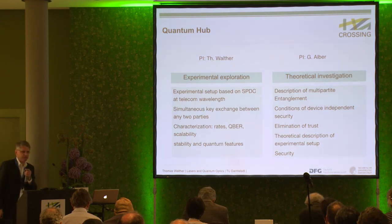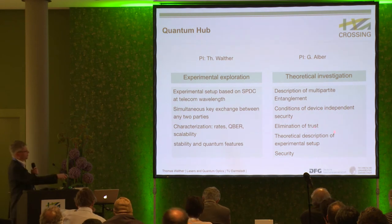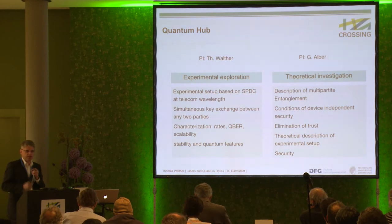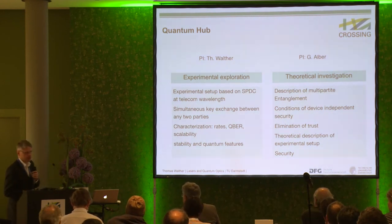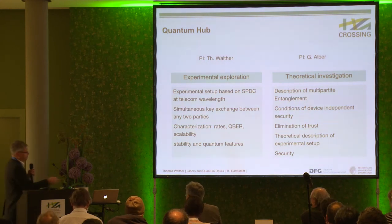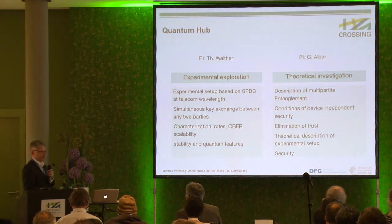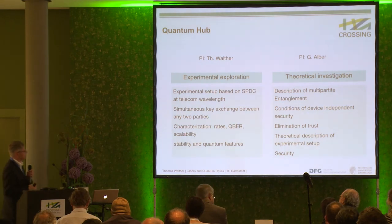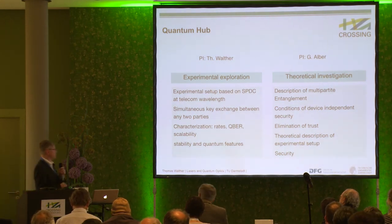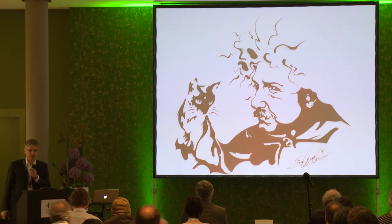The key question is: what are the conditions for device-independent security? At what point can we actually achieve device-independent security? Because this would essentially eliminate the need for trust — just like Nicola said, the devices will check themselves all the time. Alice and Bob would not have to trust the manufacturer of the quantum device; it would always check that it does what it says it does. On the experimental side, we would like to understand the system, categorize it, measure quantum bit error rates, scalability, etc. With this, I am at the end of my talk — thank you very much.